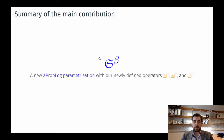The summary of our main contribution is a new AProbLog parameterization with three new operators — sum, multiplication, and conditioning/division — over beta distributions, such that each operator returns a new beta distributed random variable via moment matching.